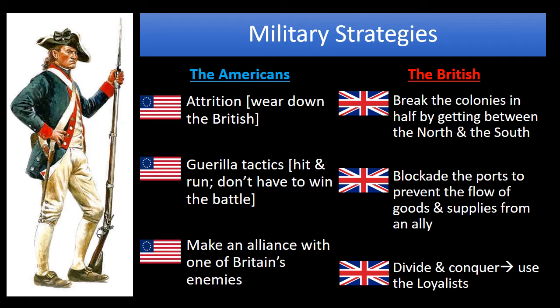Because the British had the most powerful navy in the world, they wanted to blockade the ports and prevent the flow of goods and supplies from any of the colonists' allies. And finally, they wanted to use loyalist support to try to undermine the independence movement.